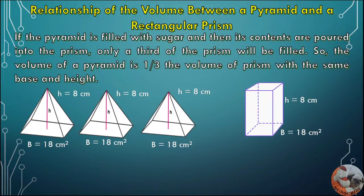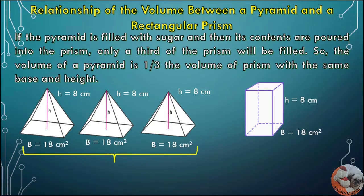If the pyramid is filled with sugar and its contents are poured into the prism, only a third of the prism will be filled. So the volume of a pyramid is one-third of the volume of the prism with the same base and height. The formula for the volume of the pyramid is V = 1/3 × base area × height.